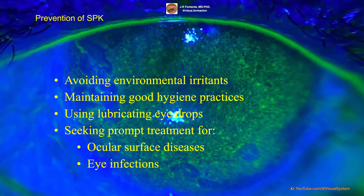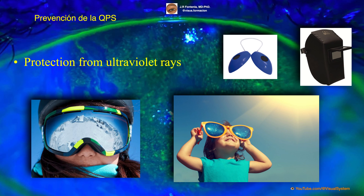Prevention includes avoiding exposure to environmental irritants such as smoke and dust, maintaining good hygiene practices when handling contact lenses, and using lubricating eye drops regularly if you have dry eyes, and seeking prompt treatment for ocular surface diseases or any eye infections. Special mention should be made of protection from ultraviolet rays, which is mandatory in welding and tanning lamps, and must also be applied during sun exposure — especially when accelerated by reflection, as in the case of snow or beach environments, and especially in children.